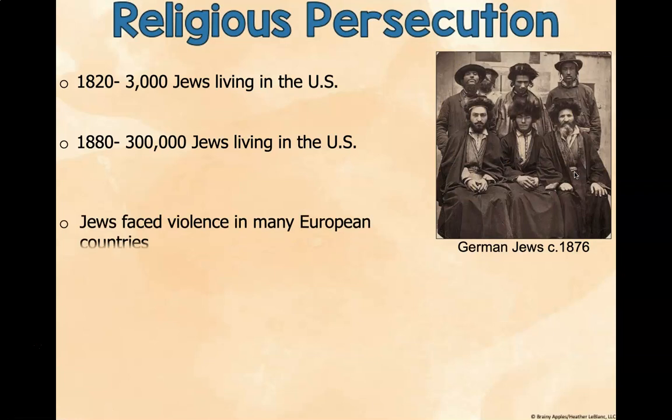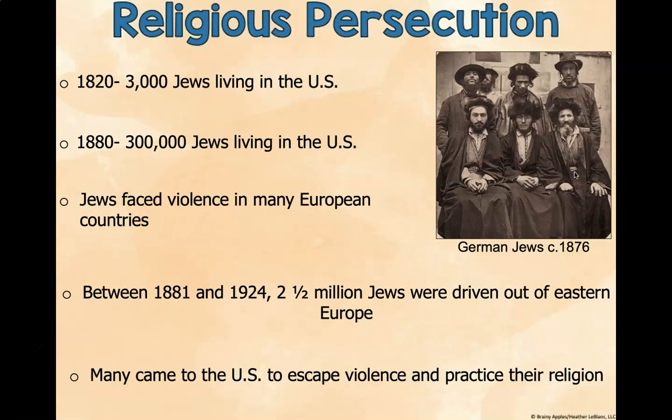Religious persecution was a major push factor. In 1820, about 3,000 Jews lived in the United States. However, by 1880, that number increased to 300,000. Jews faced violence in many European countries. Between 1881 and 1924, two and a half million Jews were driven out of Eastern Europe. Many came to the United States to escape violence and practice their religion, because in the United States, freedom of religion is protected. This is a picture of Jews from Germany in 1876.